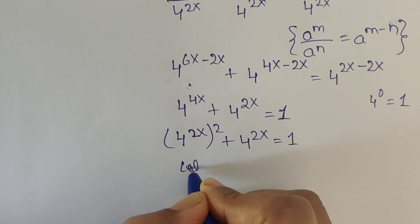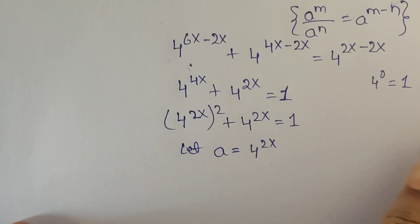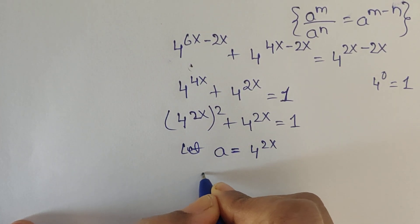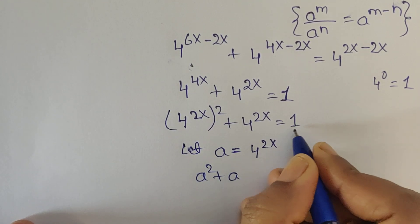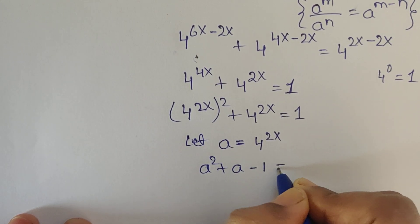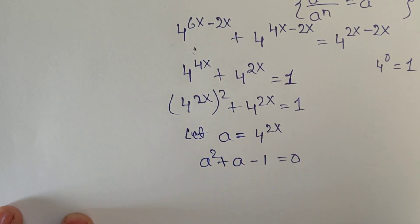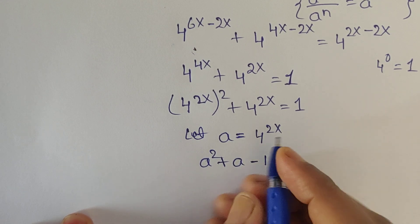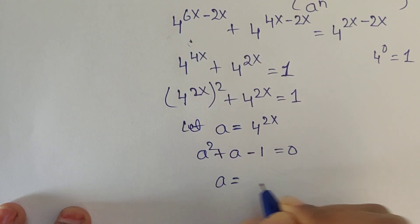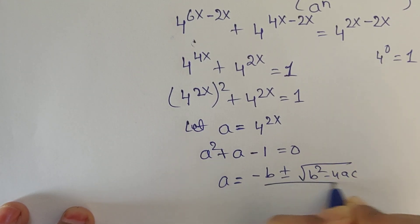So now let us consider a equal to 4 to the power of 2x. Then a squared plus a, moving the 1 to the left side, gives a squared plus a minus 1 equals 0. This is a quadratic equation. So here we can apply the quadratic formula: a equals minus b plus or minus square root of b squared minus 4ac, divided by 2a.